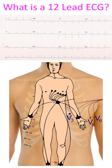The chest leads are theoretically unipolar recordings with all three limb electrodes contributing to the central terminal. They are named V1 to V6 or C1 to C6. V1 is placed in the fourth right intercostal space close to the sternum and V2 on the corresponding location on the left of the sternum. V4 is in the fourth left intercostal space in the mid-clavicular line, while V3 is positioned midway between V2 and V4. V5 and V6 are positioned at the same horizontal level as V4 in the anterior axillary line and midaxillary line respectively.